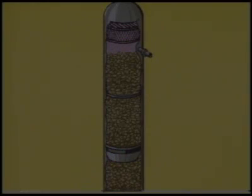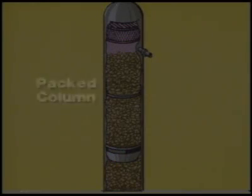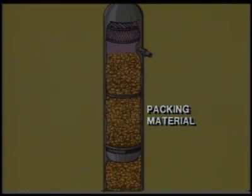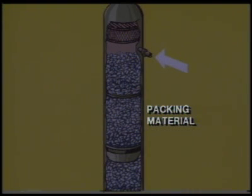Another kind of contactor column is called a packed column. In a packed column, the surface area within the vessel is increased by filling it with a packing material. The amine solution coats the packing material for a good contact surface between the amine solution and sour gas.